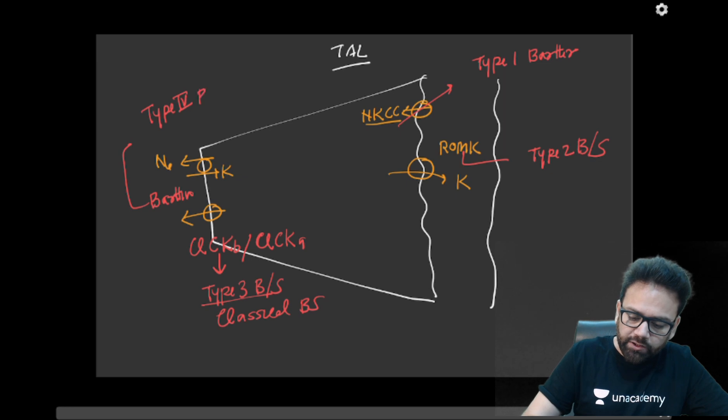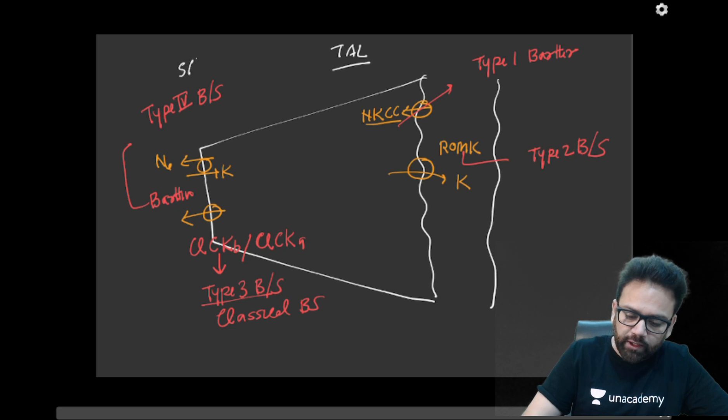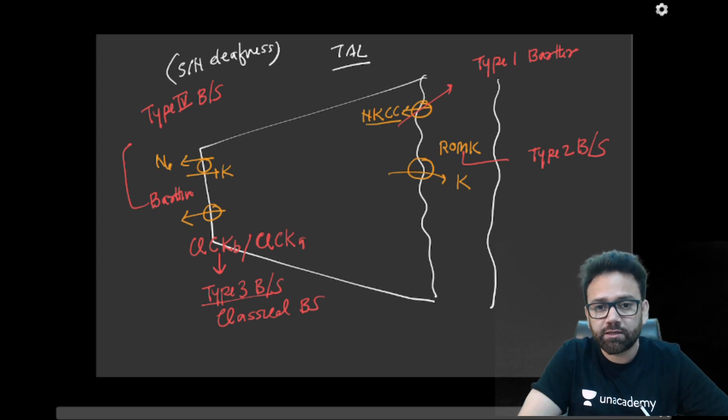Type 4 Bartter syndrome, and this is the only Bartter syndrome which is accompanied by sensorineural deafness. It is accompanied by sensorineural deafness because these chloride channels are also in the internal ear cochlea. So when Bartin is mutated, then there will be problem in the hearing also.